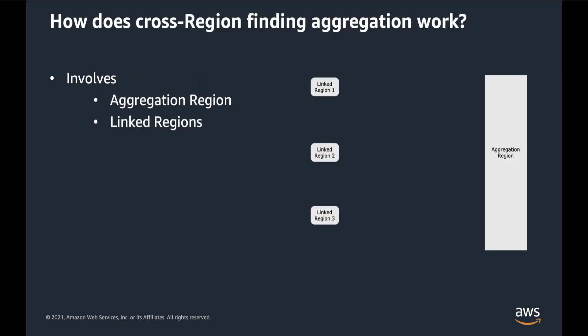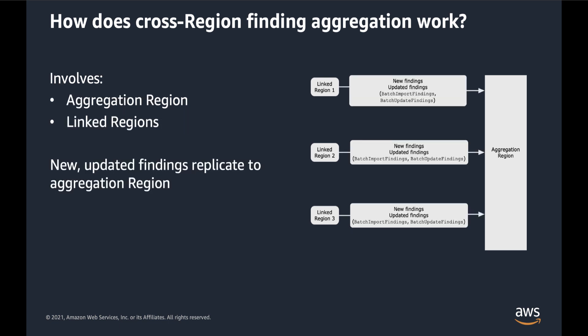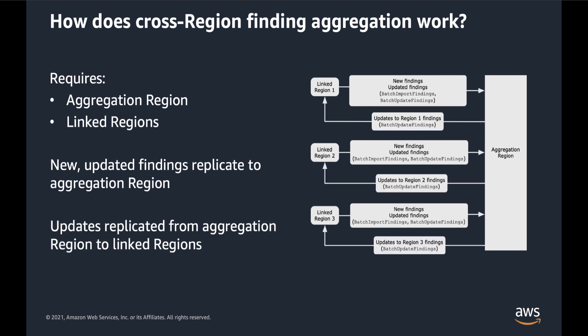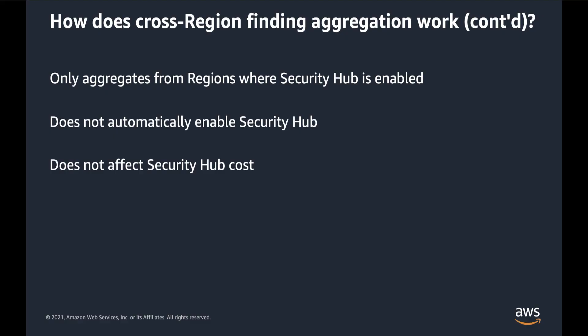Cross-region finding aggregation requires an aggregation region and linked regions. New and updated findings are replicated from the linked regions to the aggregation region. Updates to findings that occur in the aggregation region are replicated back to the linked region where the finding originated. Security Hub only replicates findings from regions where Security Hub is already enabled.